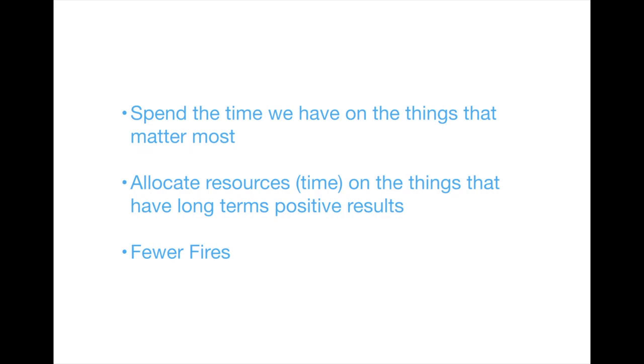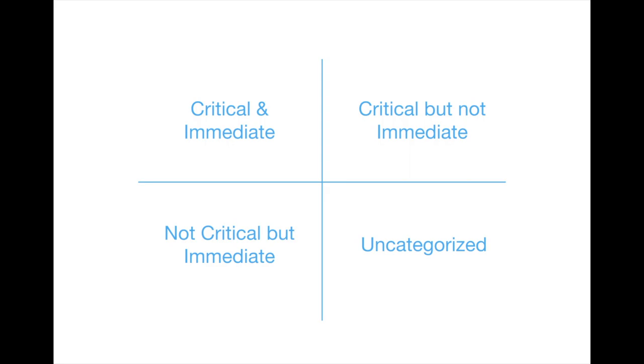In addition, in Priority Matrix, productivity involves minimizing fires. So how exactly do we do this? Well, Priority Matrix uses the four quadrants to help you focus on top priorities and projects.